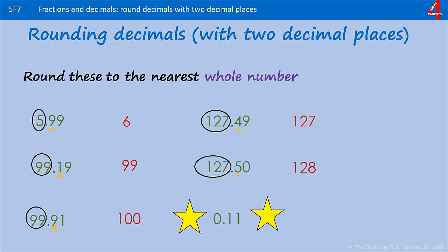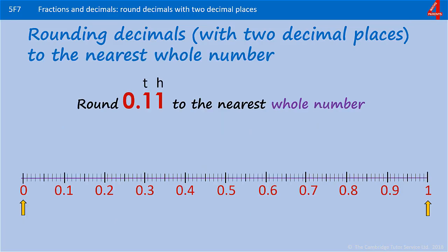This last one, the whole number is 0, and we have 1 tenth. If we look at this on the line, 0.11, you can see that the whole number it's nearest to is actually 0, and not 1, and this can be confusing for a lot of people, and there is some argument in maths as to whether 0 should be counted as a whole number.